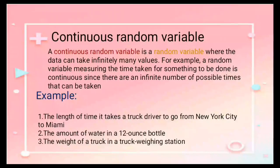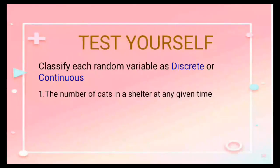Now we're going to test yourselves. Classify each random variable as discrete or continuous. Number one: the number of cats in a shelter at any given time. You can take your time. Yes, it is discrete.